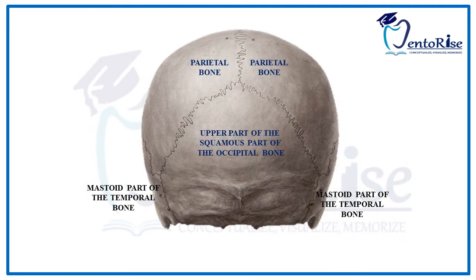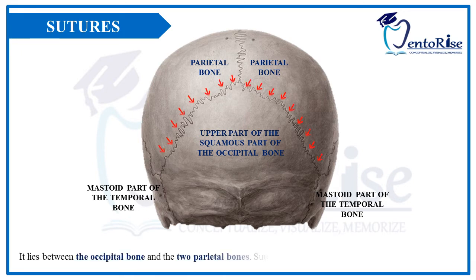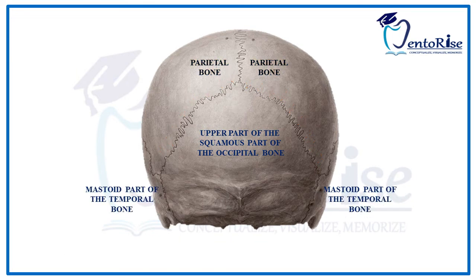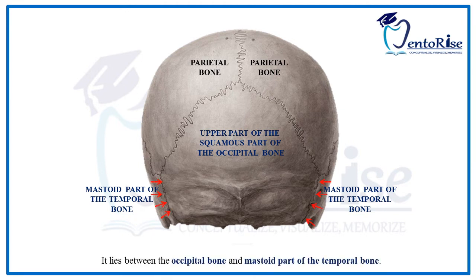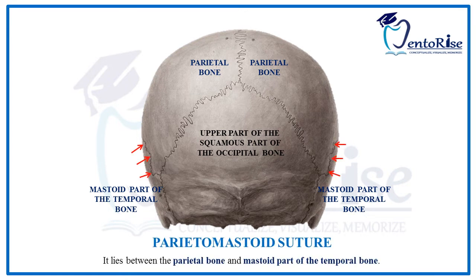The third heading would be the sutures. The suture present between the two parietal bones and the occipital bone is called the occipitomastoid suture. The suture present between the occipital bone and the mastoid part of temporal bone is also called the occipitomastoid suture, very well evident from the name itself. The suture between the two parietal bones and the mastoid part of temporal bone is called the parietomastoid suture, again very well evident from the name itself.